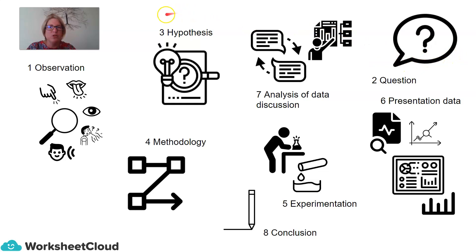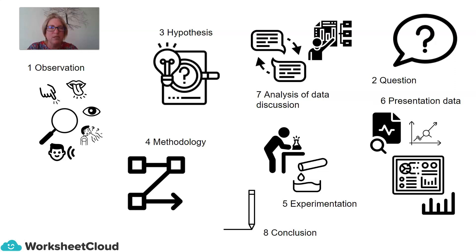From the question, we are able to generate a hypothesis — a statement that we are able to prove and disprove through experimentation. Once we have our hypothesis, we can then go about planning our methodology, planning what materials we need, what equipment we are going to use, and what procedure we are going to follow. Once we are finished with our planning, we move on to experimentation, where we use the correct materials and the appropriate method, which enables us to gather data. From this data, once our experiment is complete, we are able to represent it using tables, charts, and diagrams.